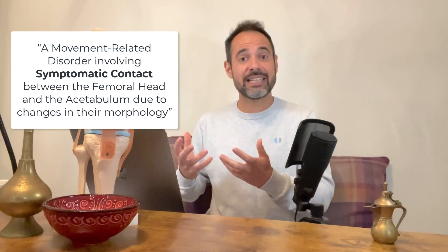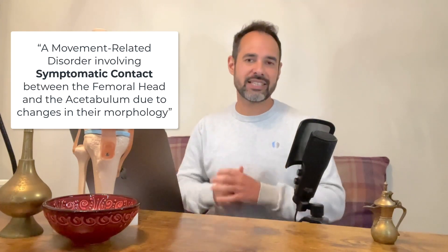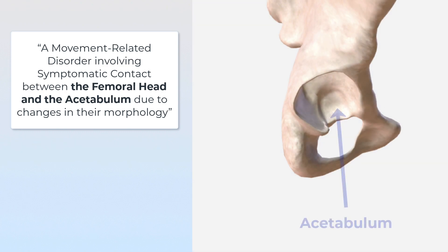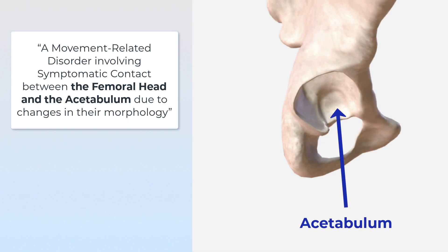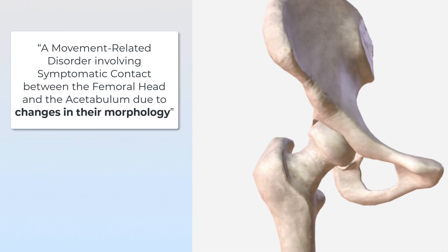Symptomatic contact basically means that when there is contact between the two surfaces, it creates the symptoms. For the last part of this definition, let's look at the anatomy — the femoral head and the acetabulum. The acetabulum is the socket-shaped part of the pelvis which the thigh bone or femur sits into. This definition suggests that when there are changes in the way these bones are formed, it leads to that symptomatic contact which creates the patient's symptoms.